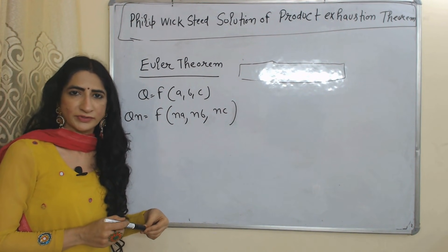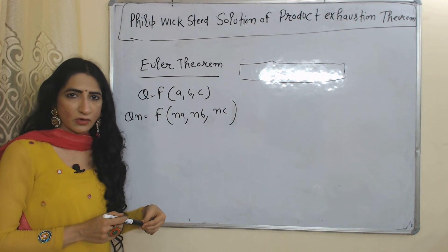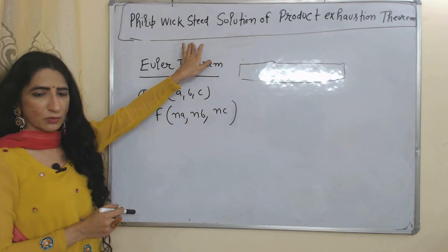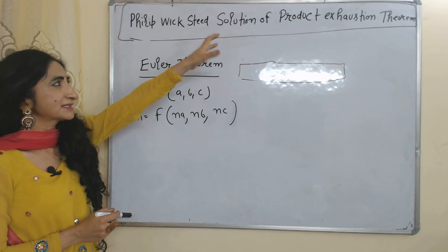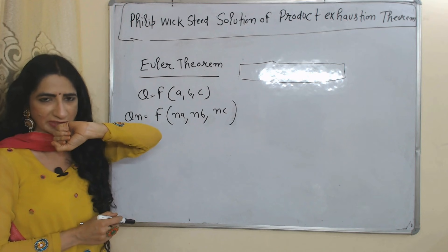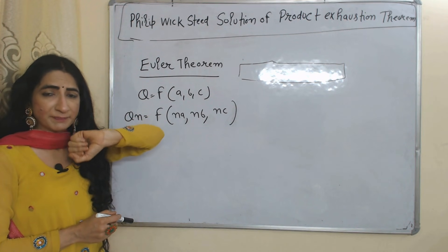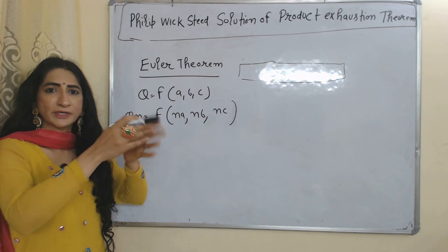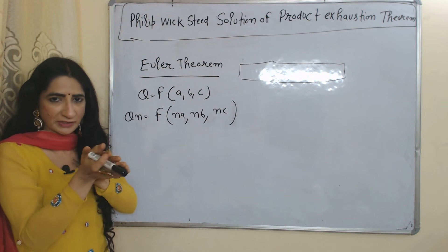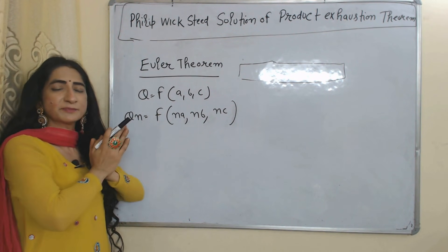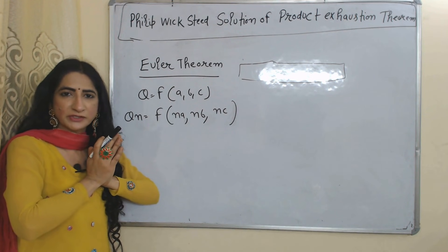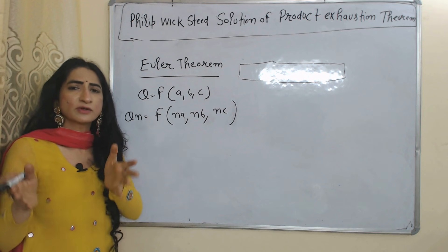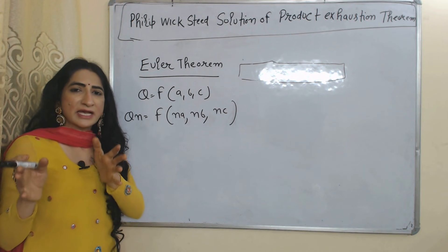The Product Exhaustion Theorem became a problem for economists, and so many economists provided solutions. First, we are going to talk about Philip Wicksteed's solution. Wicksteed used Euler's theorem to explain the solution, and Euler's theorem is based on a linear homogeneous production function.